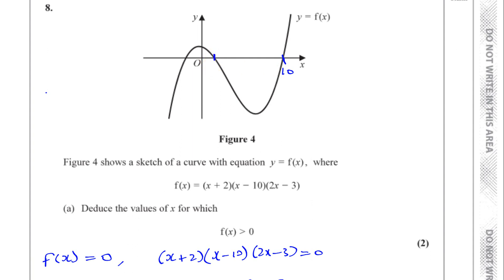So we can see that 1 must be here, 1.5 must be here, and minus 2 must be here — those are the places where the graph hits the x-axis. A graph hits the x-axis when y is 0. We know that y equals f of x, and we're finding out when f of x is greater than 0. So we know it's equal to 0 at minus 2, at 1.5, and at 1. Now we want to find when f of x is greater than 0 — that's when it's above the x-axis. We can see it's above the x-axis between minus 2 and 1.5.